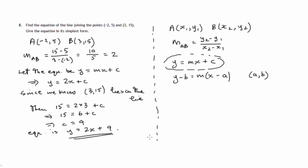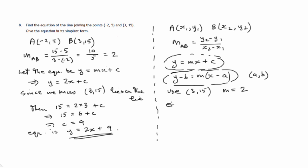There is a slightly more complicated way of doing that, and that would be to use the point-slope formula — the formula for the equation of a straight line with gradient m that has the point a, b on it. Using the point 3, 15 and m equals 2, the equation is y minus 15 equals 2 times x minus 3. We then multiply out the brackets to get 2x minus 6.